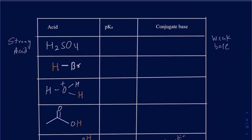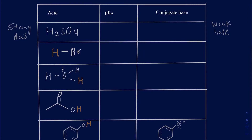Let's look at some common functional groups and their pKa values — just the common ones, not all of them; you may need to look in your book for others. Note that pKa values can vary slightly from book to book, so it's more about knowing the range than the exact value. Sulfuric acid is one of those oxyacids that's a strong acid; its pKa is approximately negative 8 or 9.